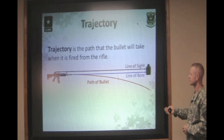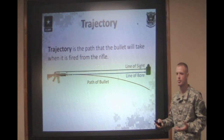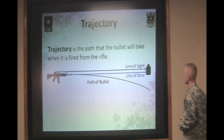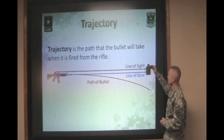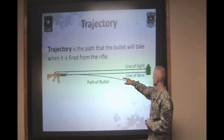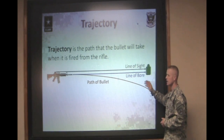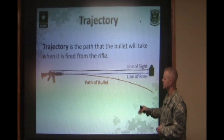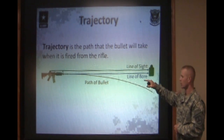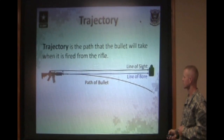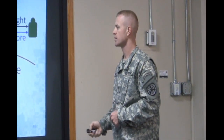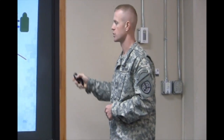Next we have the path of the bullet. Trajectory is the path the bullet will take when fired from the barrel. With the line of sight and the line of bore parallel, the trajectory of that bullet will fall short of the target if you do not increase the angle of departure. The bullet starts to fall towards the earth immediately upon leaving the muzzle when the barrel and the line of sight are parallel to the ground.